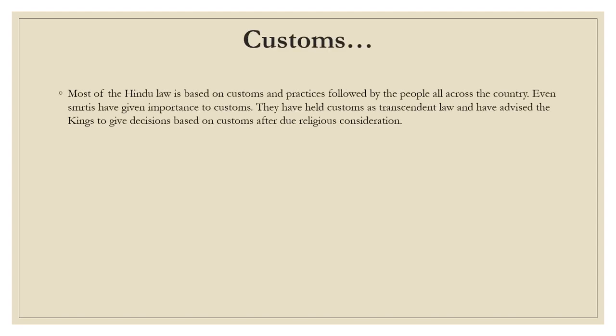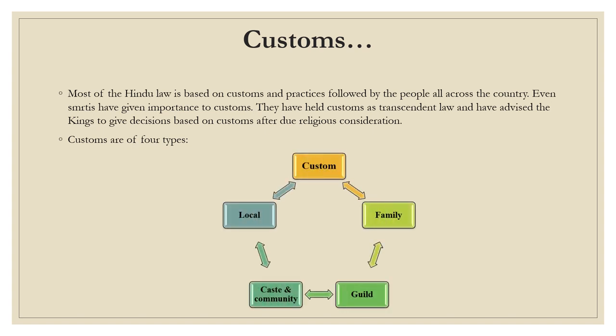The last ancient source is custom. Most of the Hindu law is based on custom and practices followed by the people all over the country. Even smritis have given importance to customs. They have held customs as transitional law and advised kings to give decisions based on customs after due religious consideration. The customs are of four types: the first one is local, second is family, third is caste and community, and fourth is guild.